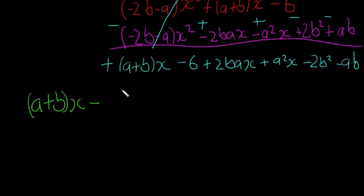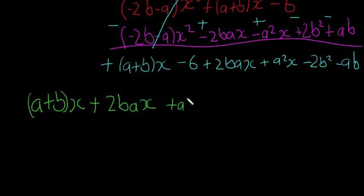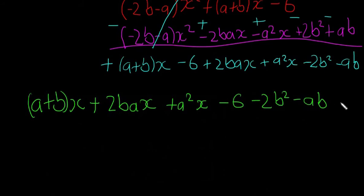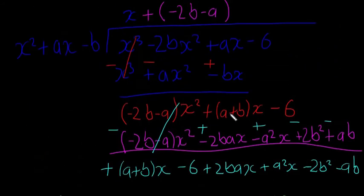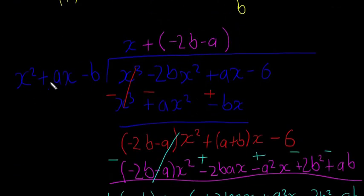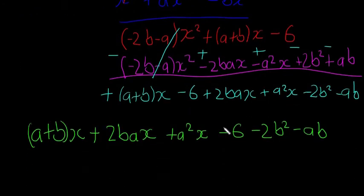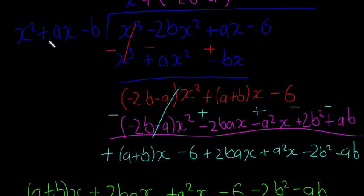What I'm going to do is write it all out again, but put all the x's on one side and all the non-x's on the other side. So: plus 2bax plus a squared x — those are all the x terms. And then everything that's a non-x: minus 6, minus 2b squared, and minus ab. This is what we call the remainder, because we divided x squared plus ax minus b into the cubic. The remainder is left at the bottom.